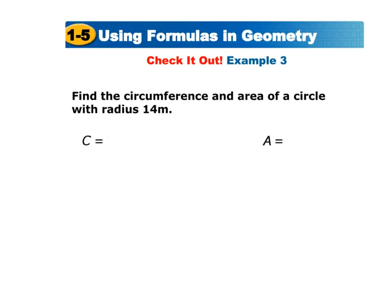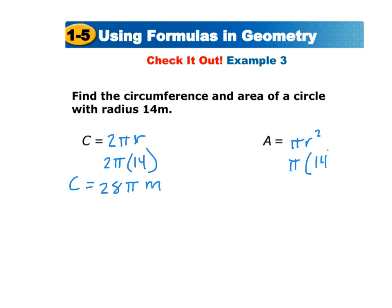Find the circumference and area of a circle with radius 14 meters. The circumference is 2piR, so 2 times pi times 14; since 2 times 14 is 28, the circumference is 28pi meters. For the area, the formula is piR squared: pi times 14 squared equals 196pi meters squared.